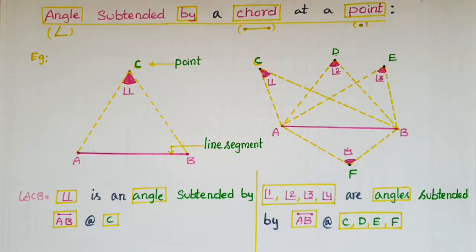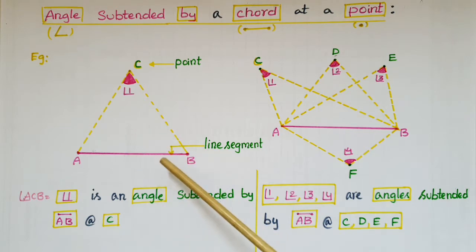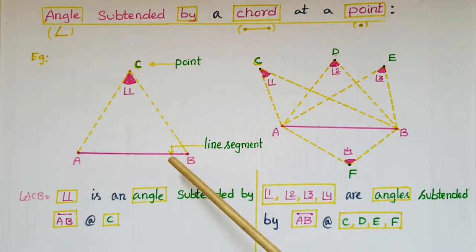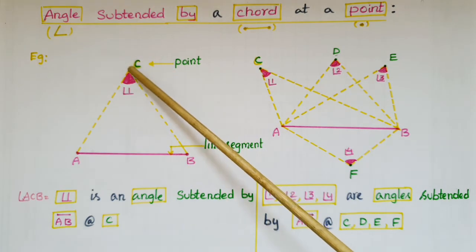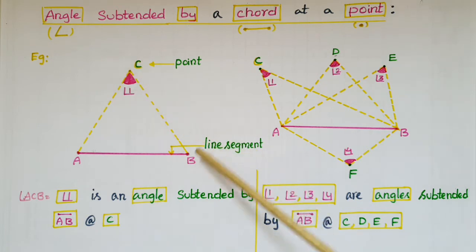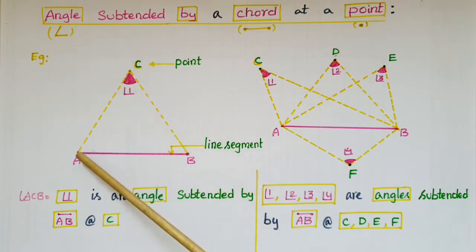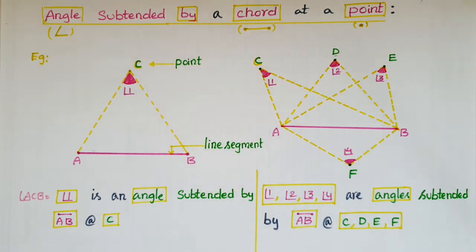Hello everyone. Today I am going to tell about angle subtended by a chord at a point. Before going to that, I am going to tell about an angle subtended by a line segment at a point. See this figure — here AB is a line segment and C is a point. Angle 1, or angle ACB, is the angle subtended by this line segment AB at point C.